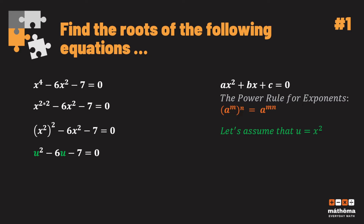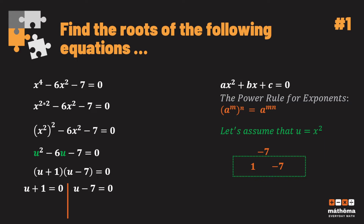I will use the AC method. We look at c, which is negative 7, and find factors of negative 7 that when added give negative 6. The factors are 1 and negative 7: 1 times negative 7 is negative 7, and 1 plus negative 7 is negative 6. So we write (u + 1)(u − 7) = 0. Equating each factor to zero gives u + 1 = 0 and u − 7 = 0, so u = −1 and u = 7.